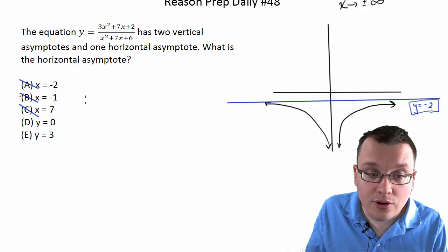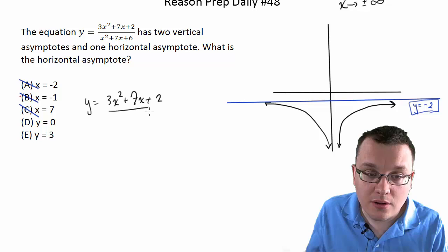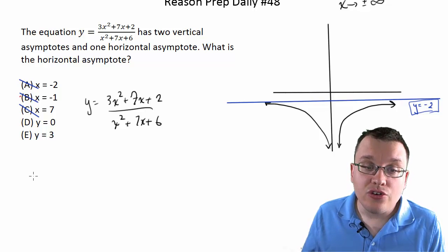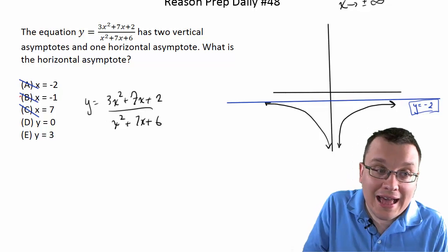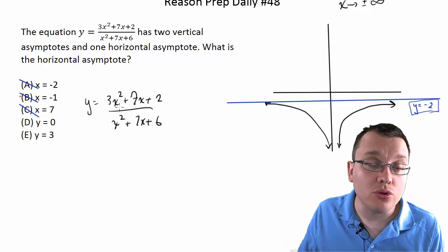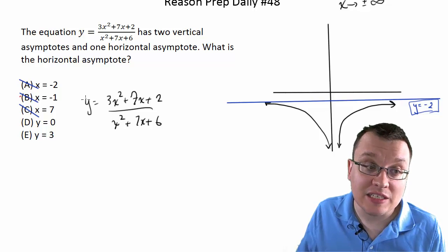So you take your equation, y equals 3x squared plus 7x plus 2, over x squared plus 7x plus 6. You take your equation and you look at the highest ordered term on the top and the bottom. In other words, you look for the term on the top and you look for the term on the bottom that has the highest exponent.